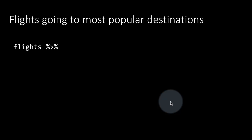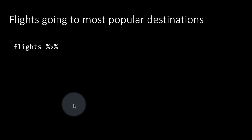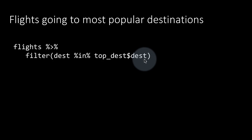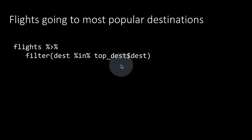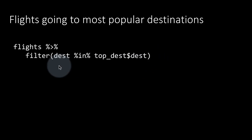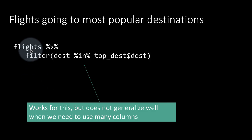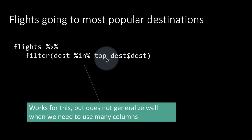Now let's find the flights that go to those top 10 most popular destinations. We say flights filter(dest %in% top_dest$dest). top_dest is the tibble we calculated earlier — the top 10 destinations — and we take the dest column from it. We filter the flights table to retain only flights whose destination is in that top 10. In some sense we are involving two tibbles — the flights tibble and the top_dest tibble — without using a formal join function.